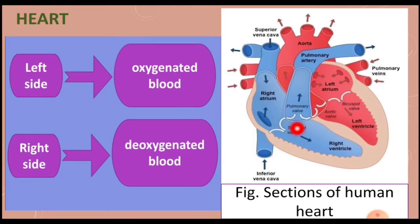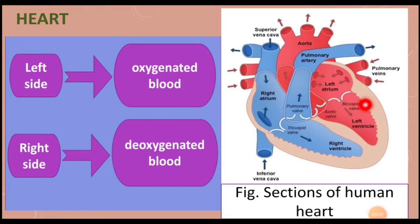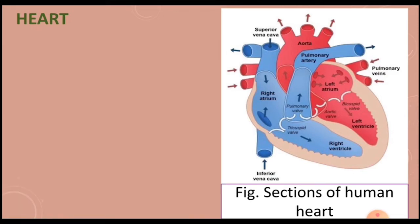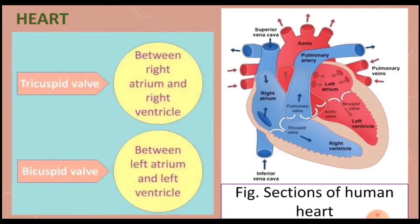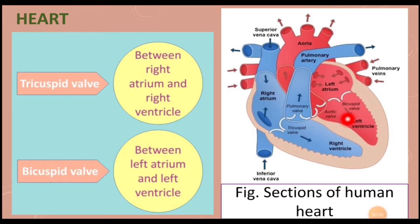The left side of the heart has oxygen-rich blood, also called oxygenated blood, whereas the right side has carbon dioxide-rich blood, also called deoxygenated blood. The left side is completely separated from the right side by a partition wall called the septum, which prevents mixing of oxygenated with deoxygenated blood. A tricuspid valve is present between the right atrium and right ventricle, and a bicuspid valve is present between the left atrium and left ventricle.